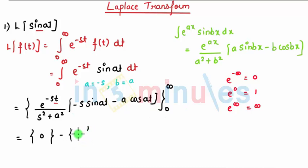And the second one, as you put 0, that becomes 1 divided by s square plus a square. Put 0: sin 0 is 0, cos 0 is 1. So I get minus a, which finally lands up with the answer: minus and minus becomes plus, so a divided by s square plus a square.